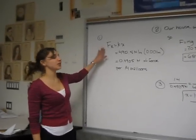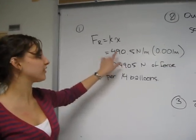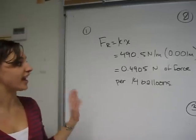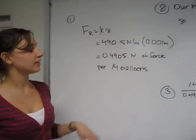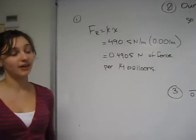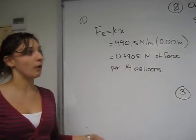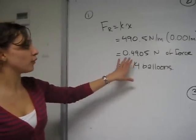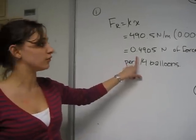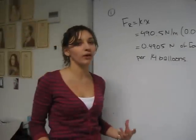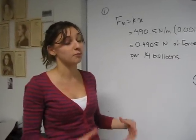So, using Fr equals Kx, knowing that our spring constant is about 490.5 Newton meters, times the displacement, which was 0.001 meters or about 1 millimeter, we get that 14 balloons exert about 0.4905 Newtons of force, which is about 3.5 times 10 to the negative 2 Newtons per balloon.